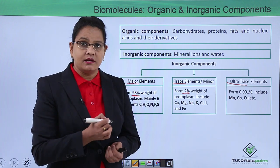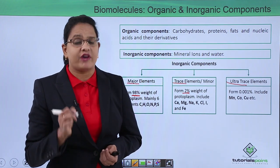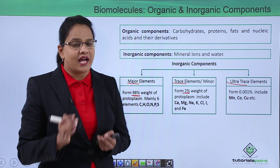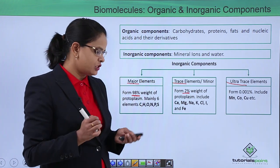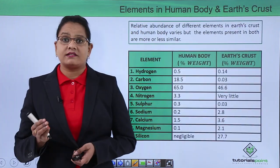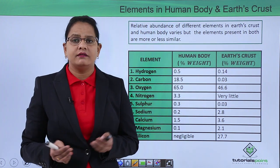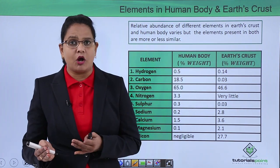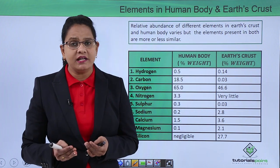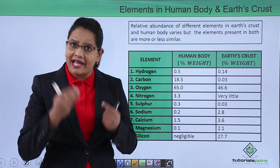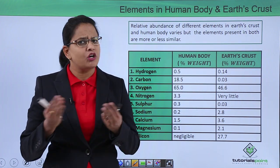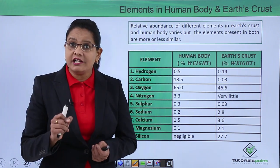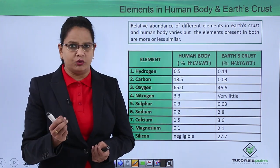Ultra trace elements are also very important but required in very, very small amounts — around 0.001%. Next, when the earth's crust and the human body were both chemically analyzed, it was found that the elements were almost similar, as you can see in the table, but what varied was their relative abundance in both.